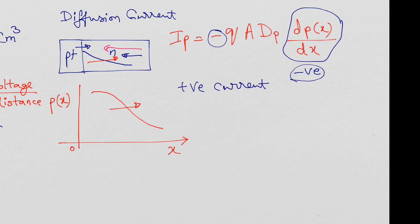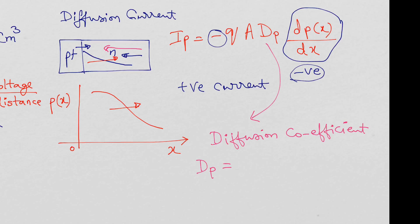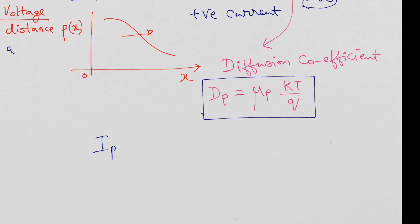Dp is called the diffusion coefficient. Dp is actually dependent on the mobility: Dp = μp × kT/q, where kT/q is the thermal voltage. So Dp ultimately depends on the mobility of the holes. The hole diffusion current is: ip = −q × A × Dp × dp(x)/dx, where A is the cross-sectional area.